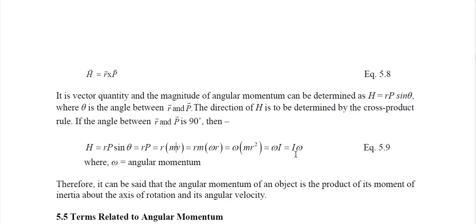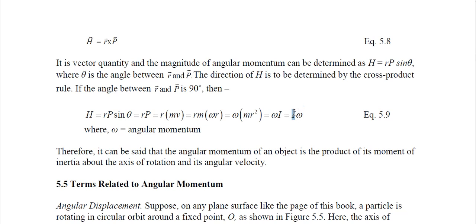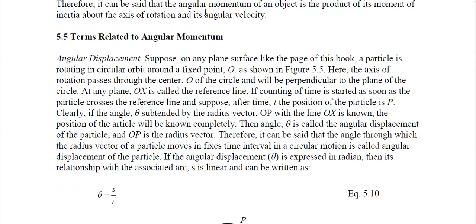If we know the mass moment of inertia I of a composite or irregular section, then we can find the angular momentum. Another question: why did we not use this equation for a particle? Because for a particle we did not know the mass moment of inertia. Now for a rigid body we are discussing it here, and for a rigid body the mass moment of inertia is known.